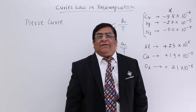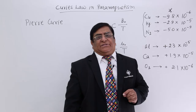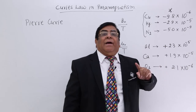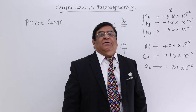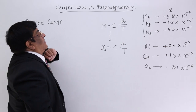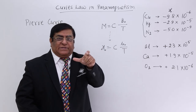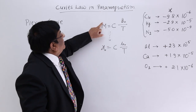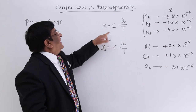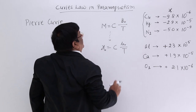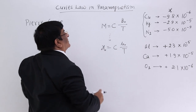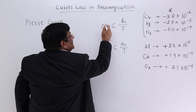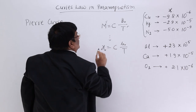It is observed that this value changes with respect to temperature — when temperature increases or decreases, magnetization changes. There was a law given by Pierre Curie speaking about the magnetization of a material with respect to temperature. This says that magnetization of a paramagnetic material is related to temperature by the equation M equals C times B₀ divided by T, where B₀ is the magnetic field and C is Curie's constant.